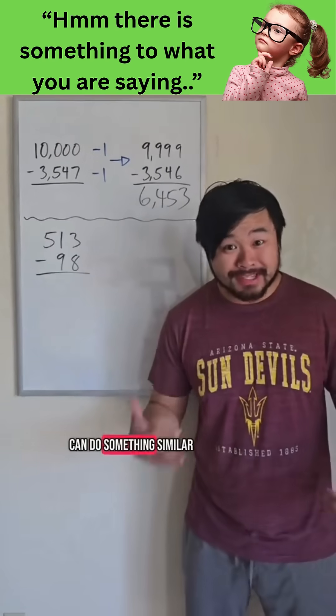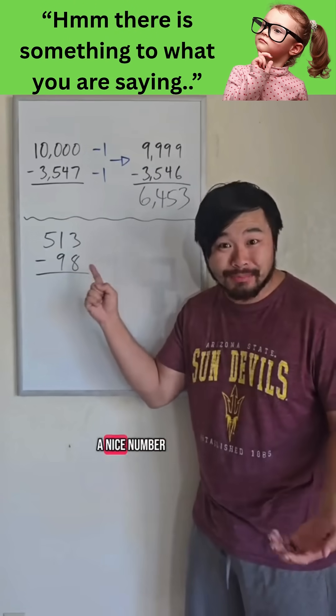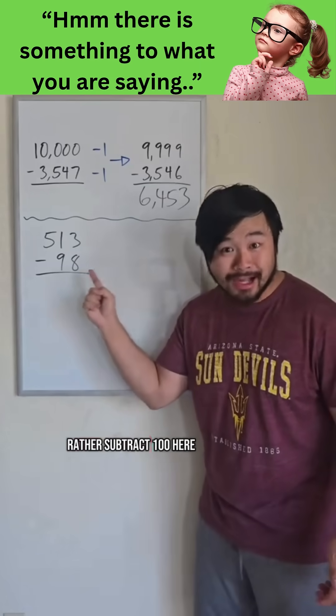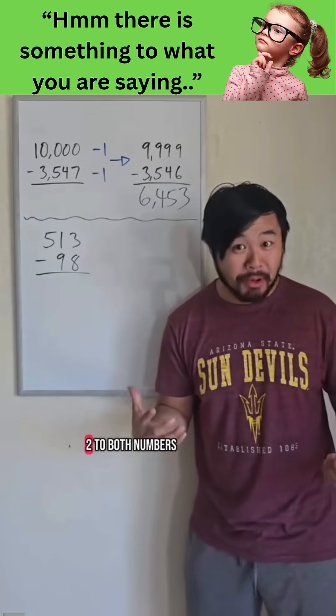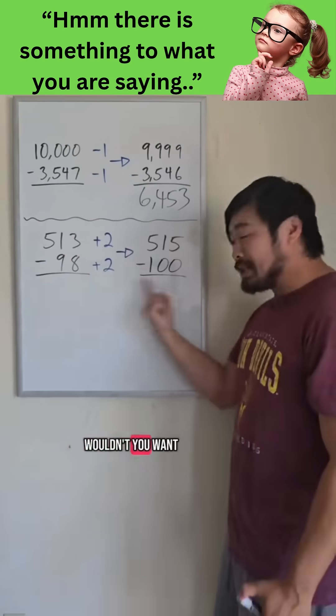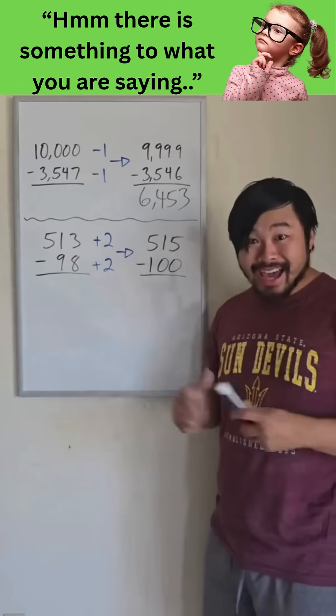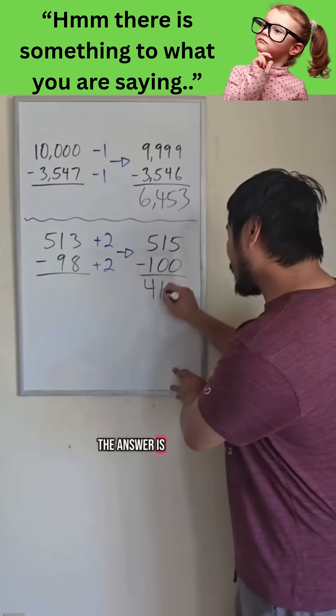And we could do something similar when what we're taking away is really close to a nice number. I would much rather subtract 100 here, so let's add 2 to both numbers. Wouldn't you want to do this problem instead? Yeah, I can see that the answer is 415.